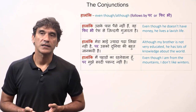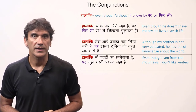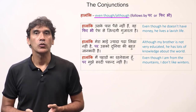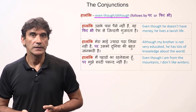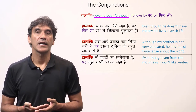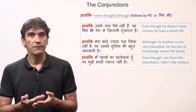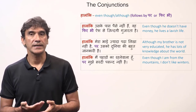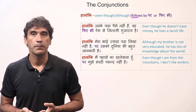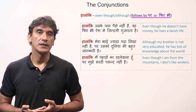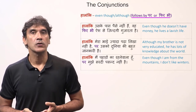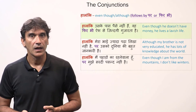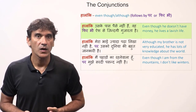Now let's take the conjunction 'halanki'. 'Halanki' means 'although', 'even though', or 'though'. Sentences with 'halanki' have two clauses: the first clause starts with 'halanki', and the second clause starts with 'par' or 'phir bhi'. The second clause shows a contrast to the first clause.